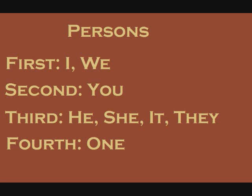The person part of the verb comes at the very end and is denoted by a consonant. The first person (I/WE) takes an S at the end. The second person (YOU) takes an M at the end. The third person (HE, SHE, IT, THEY) takes a K at the end. The fourth person (ONE) takes ZR at the end.